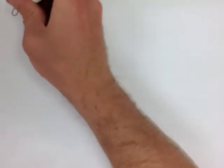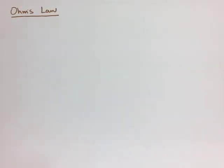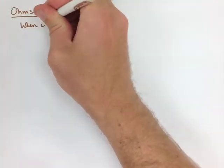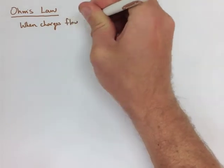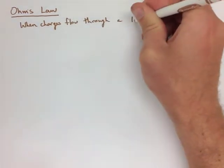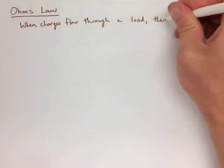The first thing we're going to look at is Ohm's Law. Now with this, we know when a charge flows through a load, they experience some resistance. Now this resistance results in a loss of potential energy.